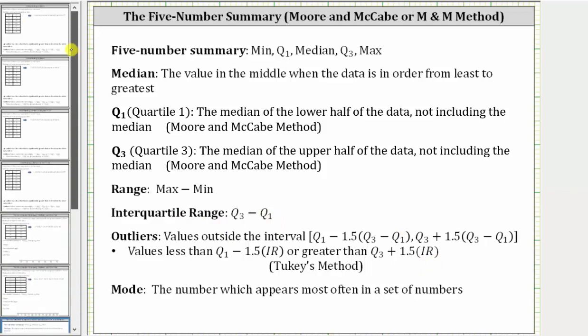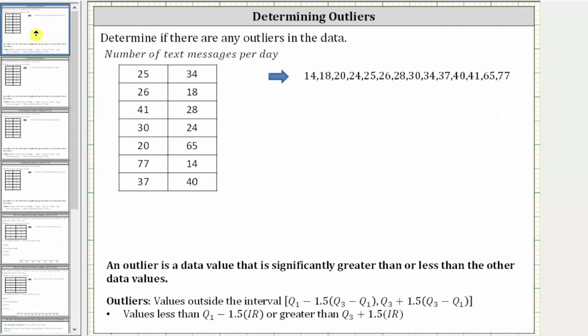So going back to our example, the first step is to order the data from least to greatest, which I've already done here to save time. There are a total of 14 data values, and therefore we say n is equal to 14.